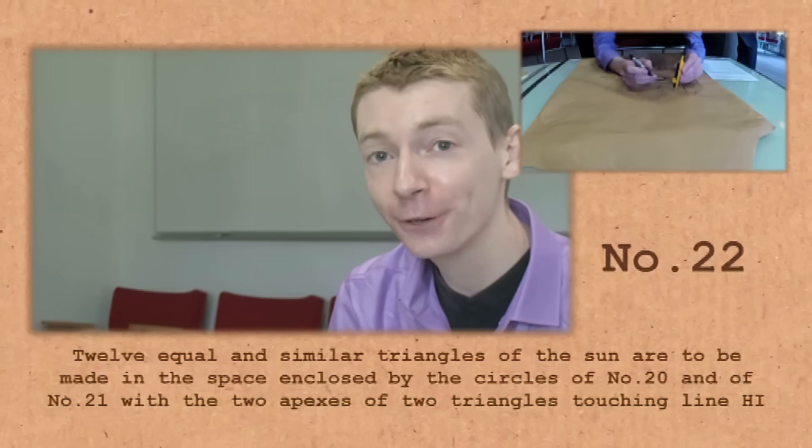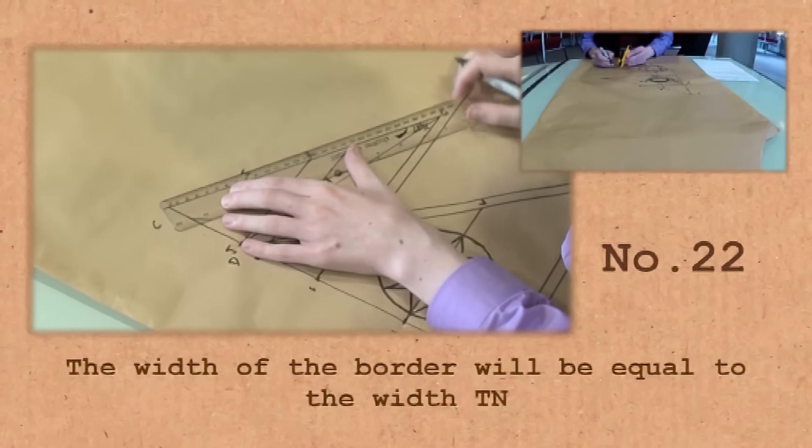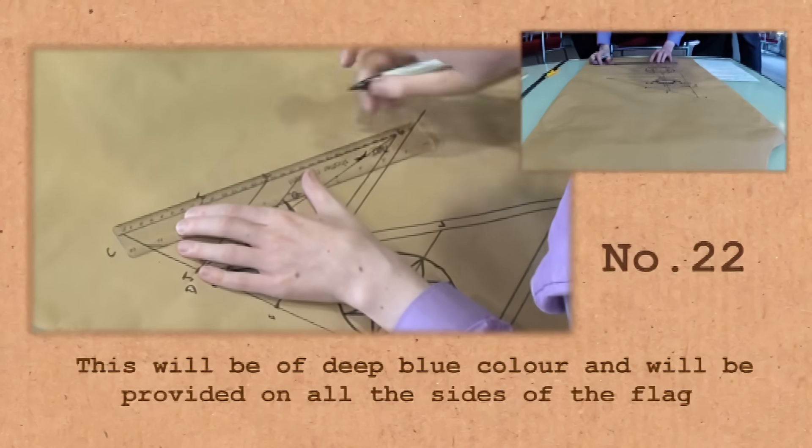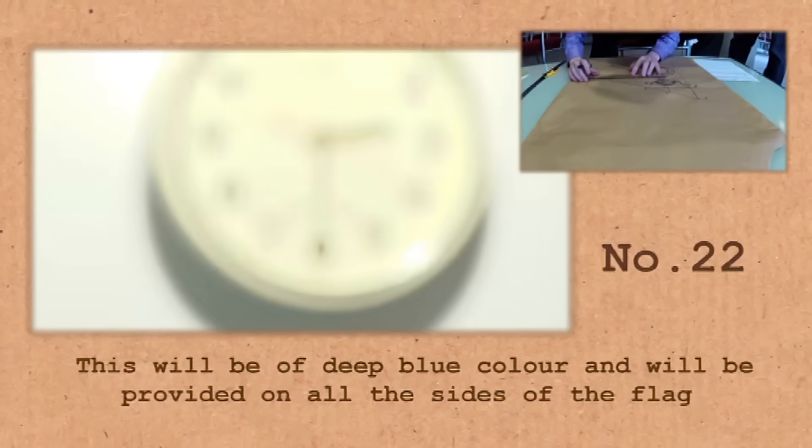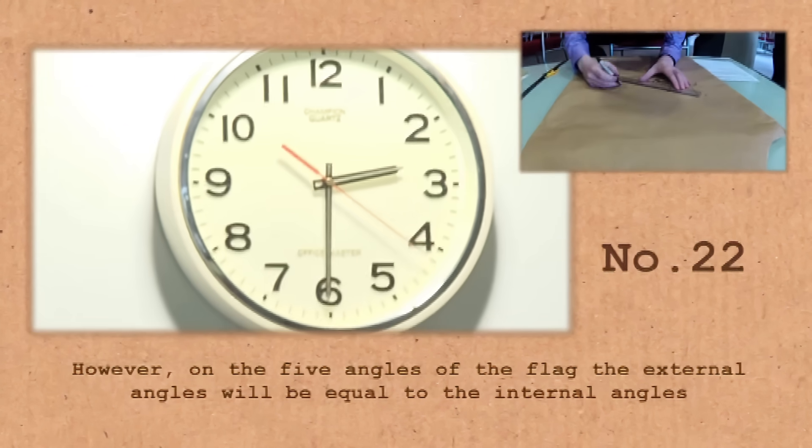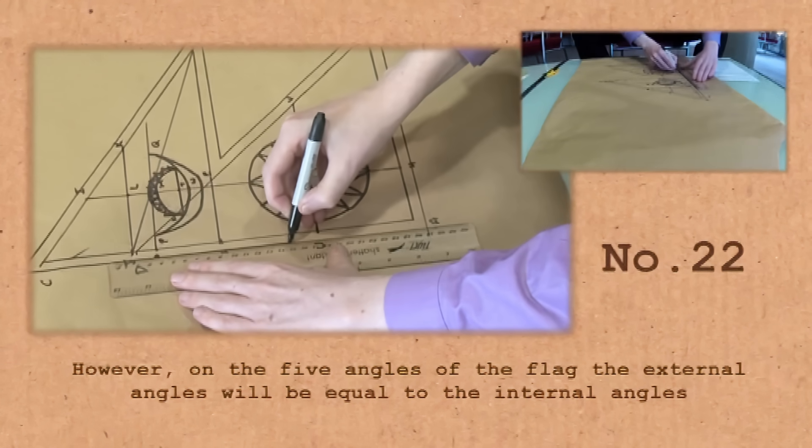D, method of making the border. The width of the border will be equal to the width of TN. This will be of deep blue colour and will be provided on all sides of the flag. However, on the five angles of the flag, the external angles will be equal to the internal angles.